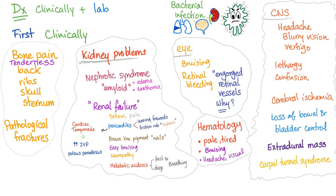The patient leans forward and you will hear a triphasic friction rub over the pericardium. Pericarditis can lead to cardiac tamponade, causing increased jugular venous pressure and pulsus paradoxus. Brown line pigment in the nails is common in renal failure, along with easy bruising due to uremia, neuropathy, and metabolic acidosis — the patient breathes fast and deep.